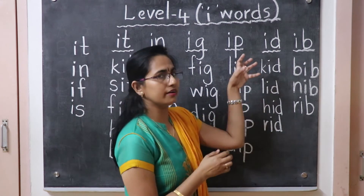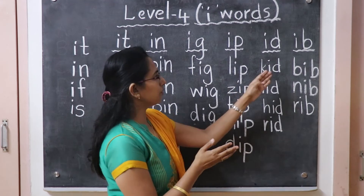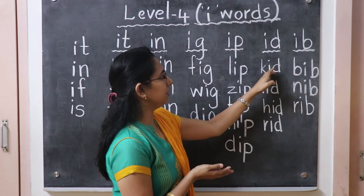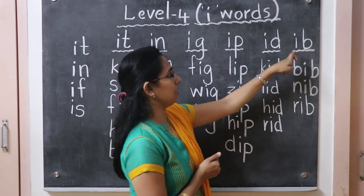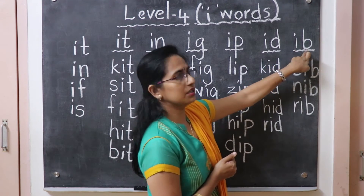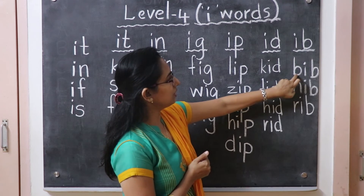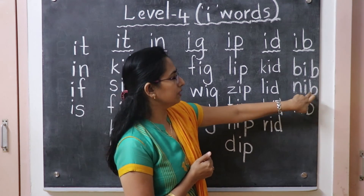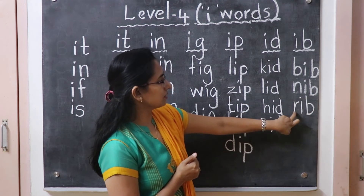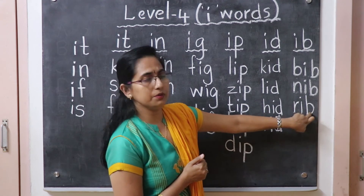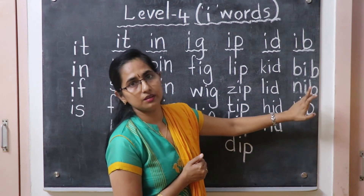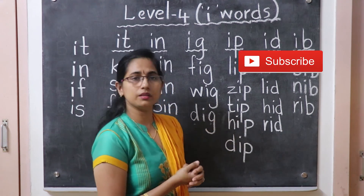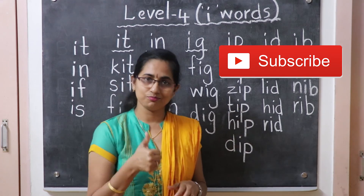Now -ib words, already familiar to people. Bib. N-ib: nib. R-ib: rib. So this is very easy. This is the -ib word pattern. Thank you.